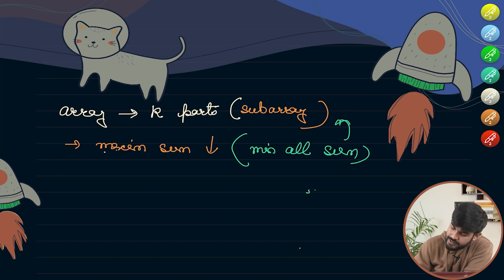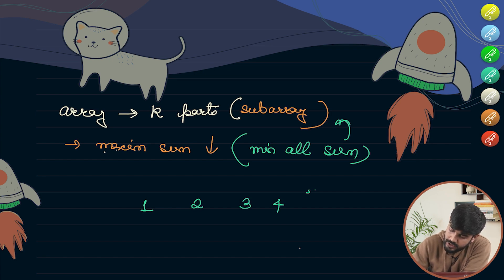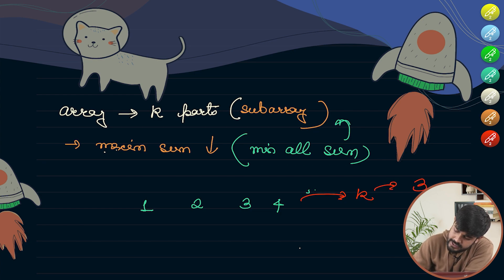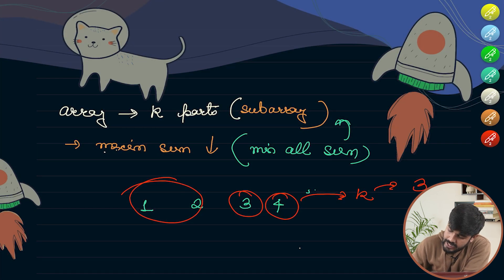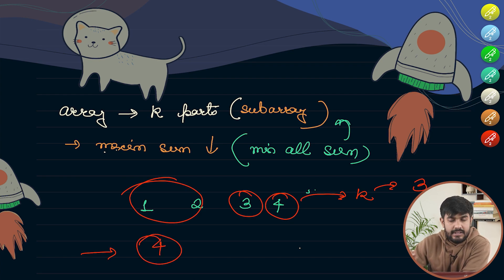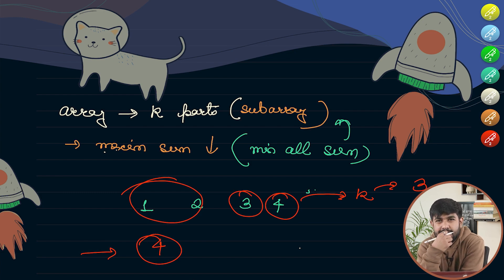For example, if you are given 1, 2, 3, 4 and you are told to divide it into 3 parts, I would divide it like this and the maximum sum out of the 3 parts is 4. So 4 would be my answer.